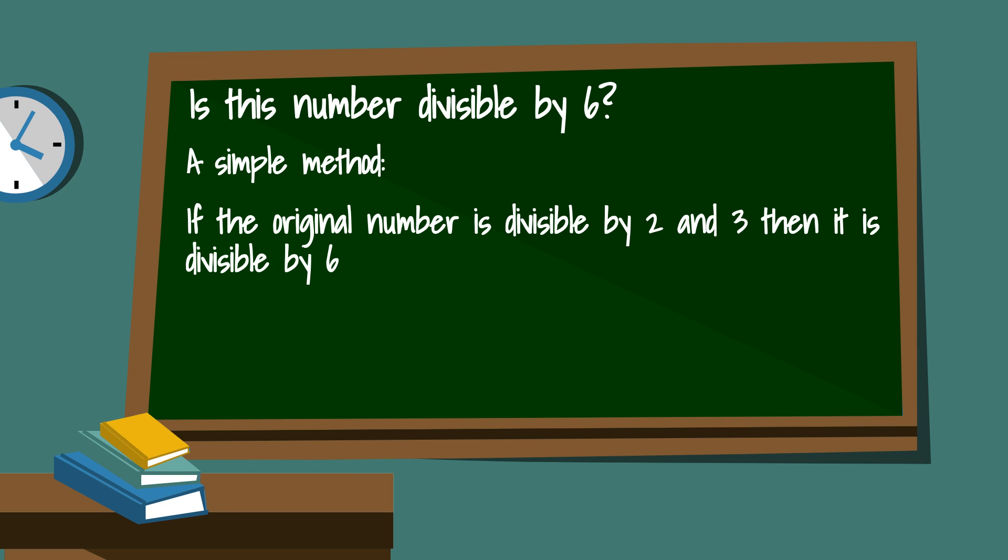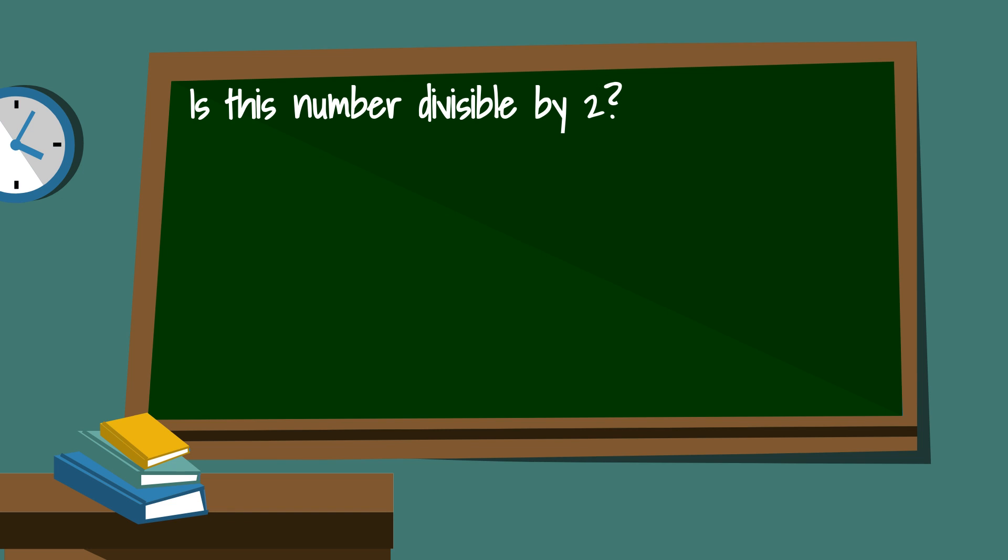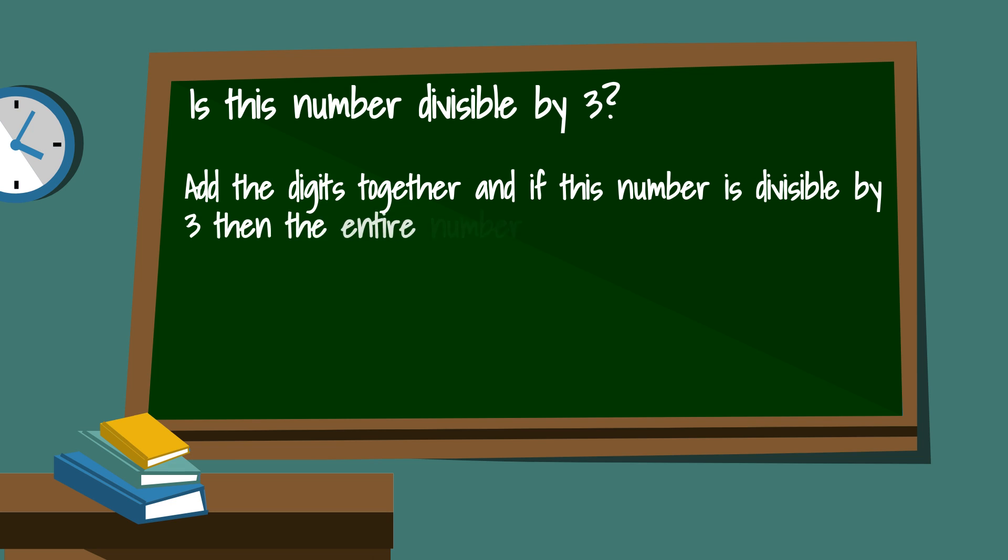Let's go over quickly the divisibility rules for 2 and 3. If a number ends in 0 or ends in an even number it is divisible by 2. For 3, if you add the numbers together and this number is divisible by 3 then the entire number is divisible by 3.